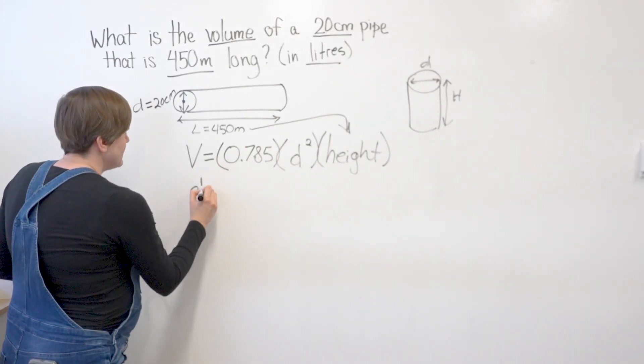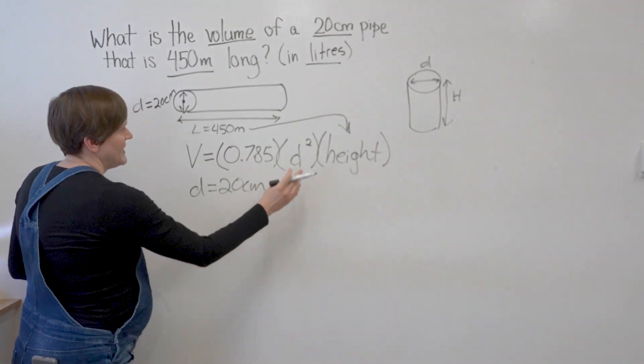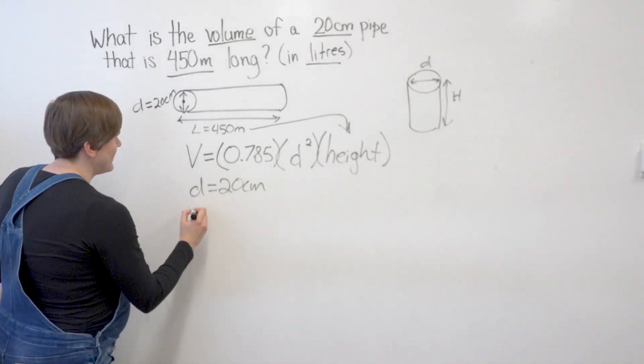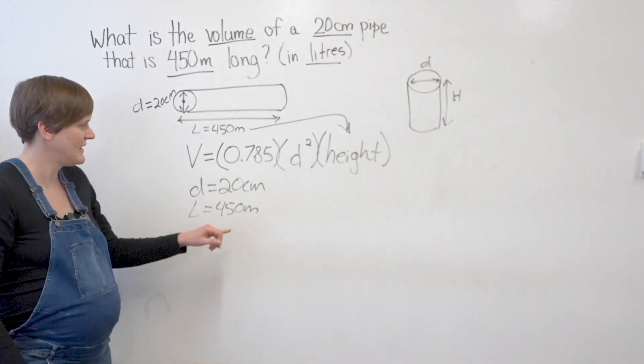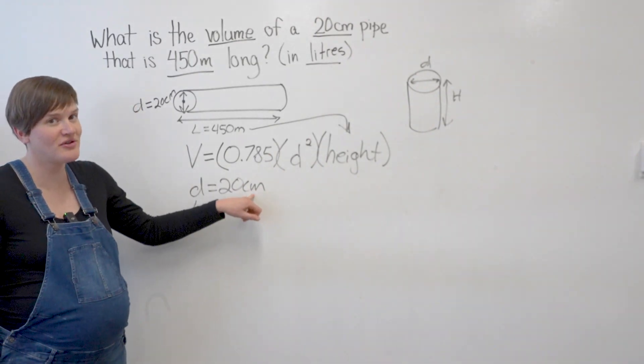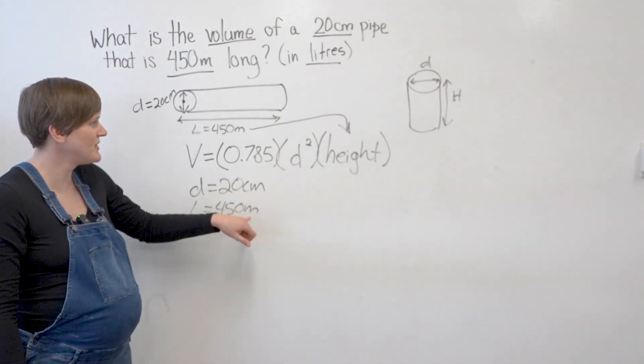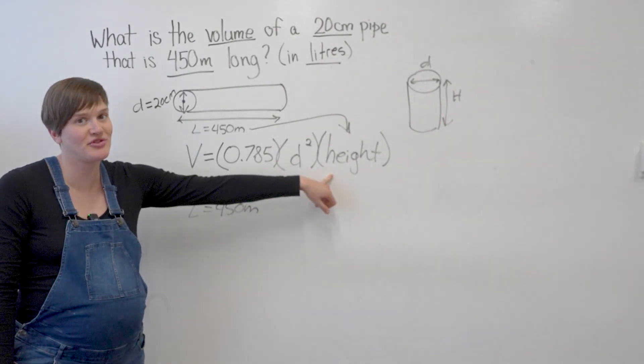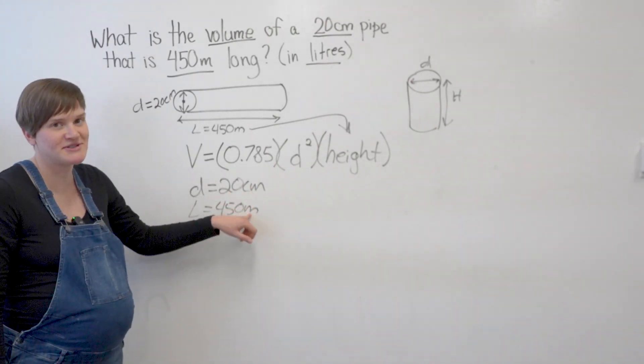So D I know is 20 centimeters. And my height or length in this case is 450 meters. Now notice here we've got two different units. Centimeters and meters. I can't just put both of these values into my formula and multiply them by each other. Can't multiply centimeters by meters.